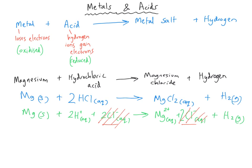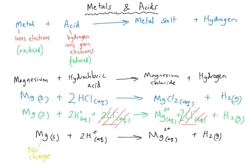The simplified ionic equation makes it easy to track each element. Magnesium starts with no charge but ends as 2+ — so it must have lost two negative electrons and been oxidized. The two hydrogen ions each start as 1+ and end with no charge as H₂, meaning each gained one electron and was reduced — so two electrons were gained overall. This is a redox reaction: magnesium gives away two electrons, and each of the two hydrogen ions takes one.